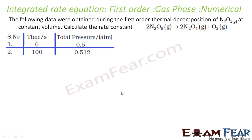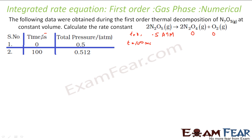Let's see one numerical on this concept. The following data were obtained in the first order thermal decomposition of N₂O₅ at constant volume — we have to find the rate constant. The total pressure is given. At t = 0, total pressure was 0.5 atm due to N₂O₅ only. At t = 100 seconds — please note the units, they are very critical.